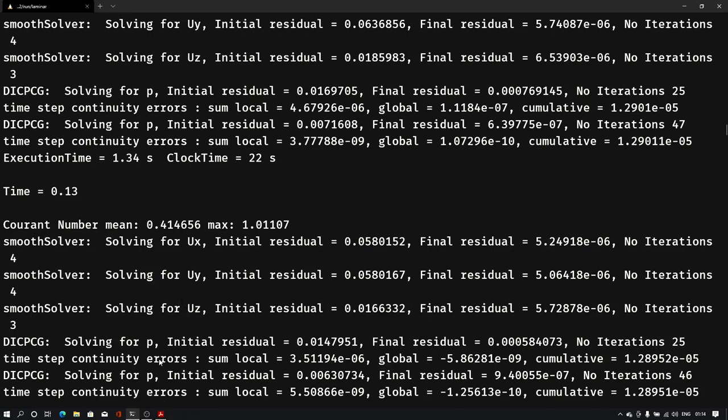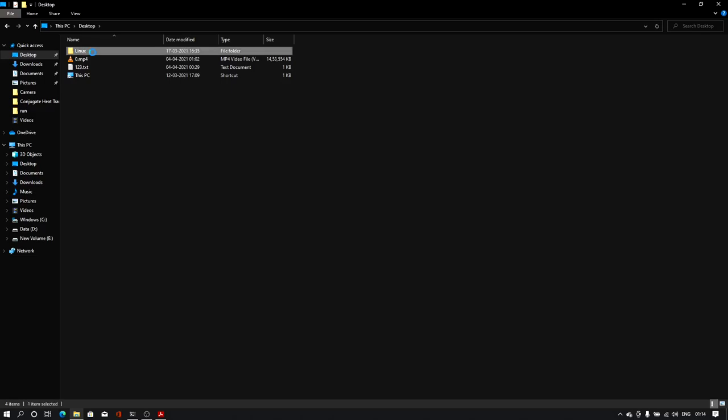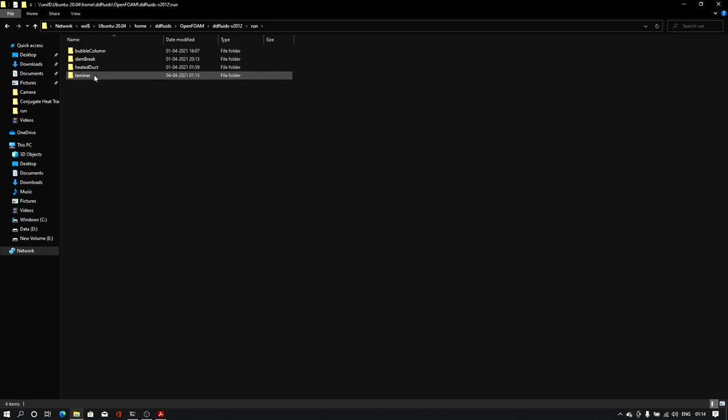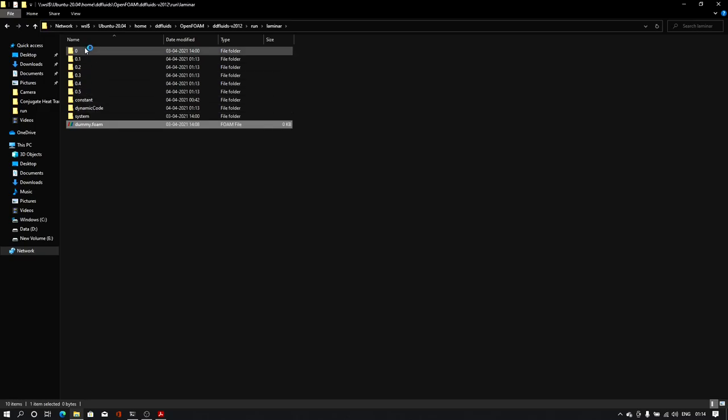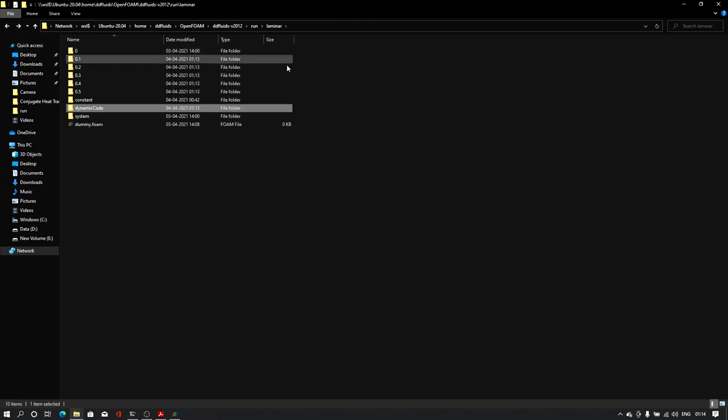So as you can see here with the 0 to 0.5 we have this dynamicCode file. Now if you open it you will see this parabolicVelocity - so that is our temporary boundary condition that it is saving into this particular case.